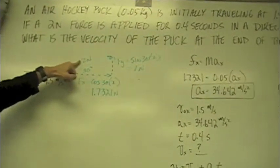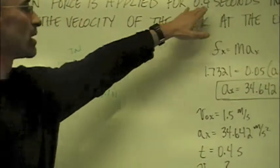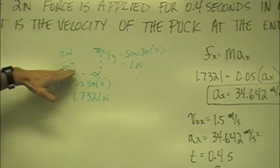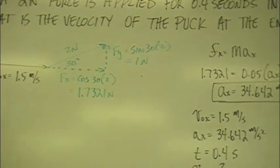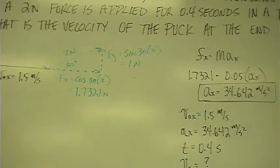We're going to apply that force for 0.4 seconds and that force is going to be directed 30 degrees north of east. What is the velocity of the puck at the end of the 0.4 seconds?